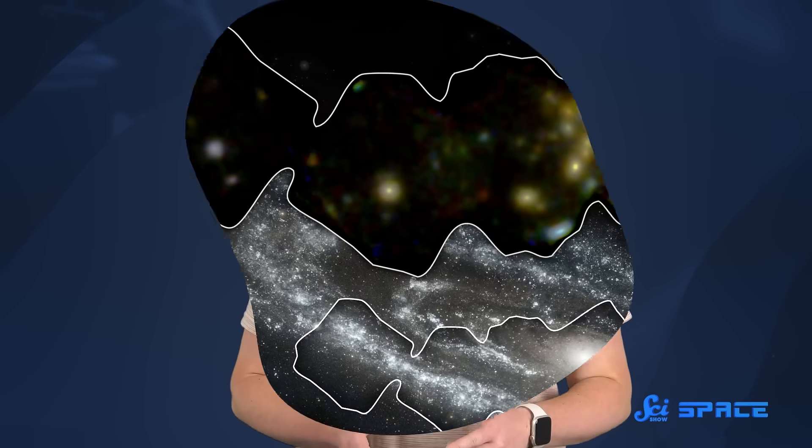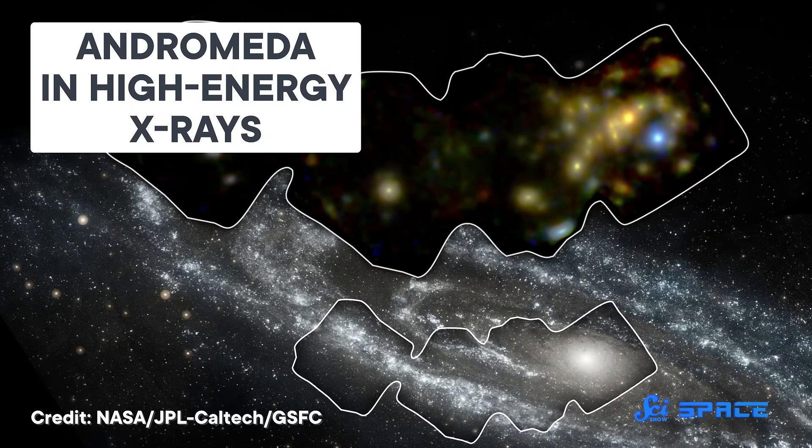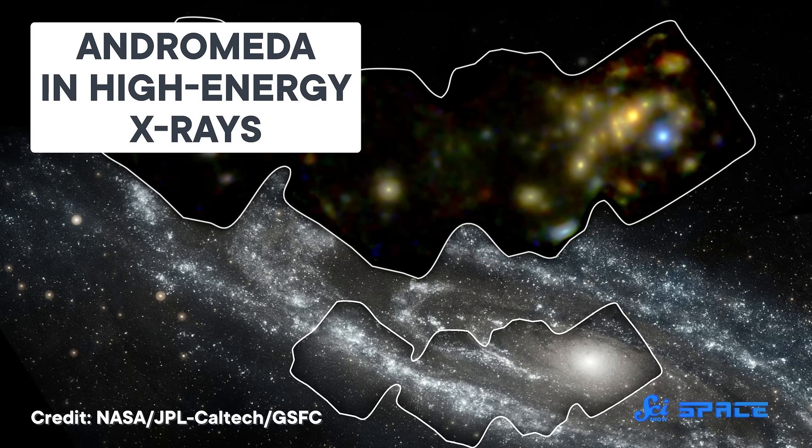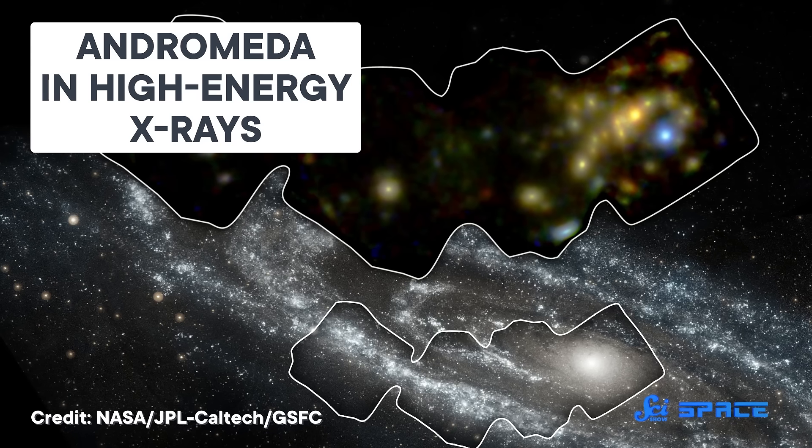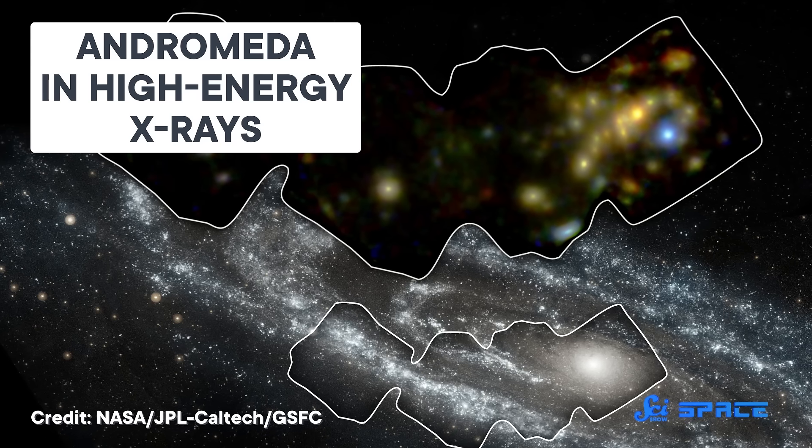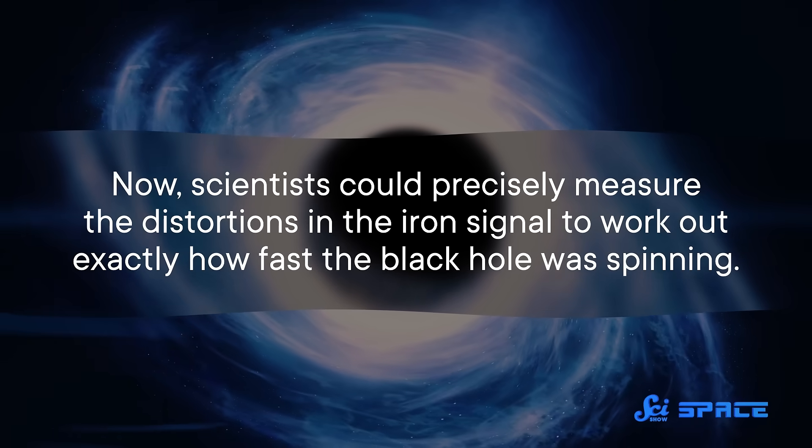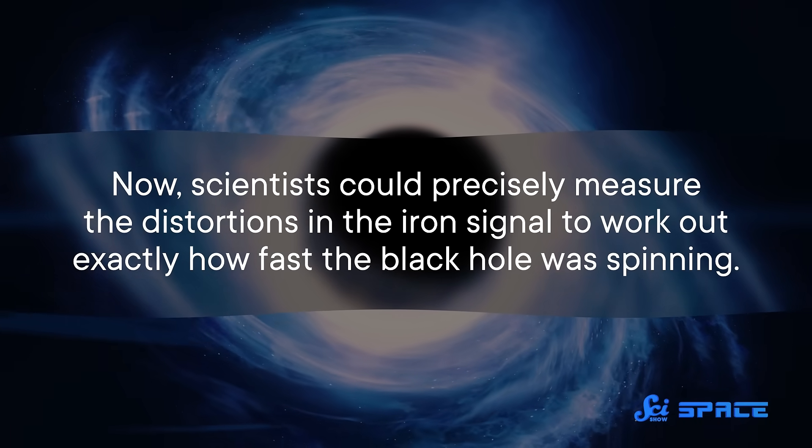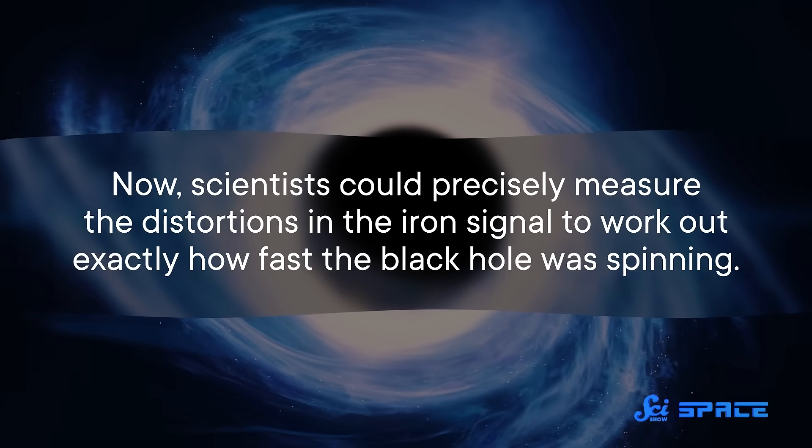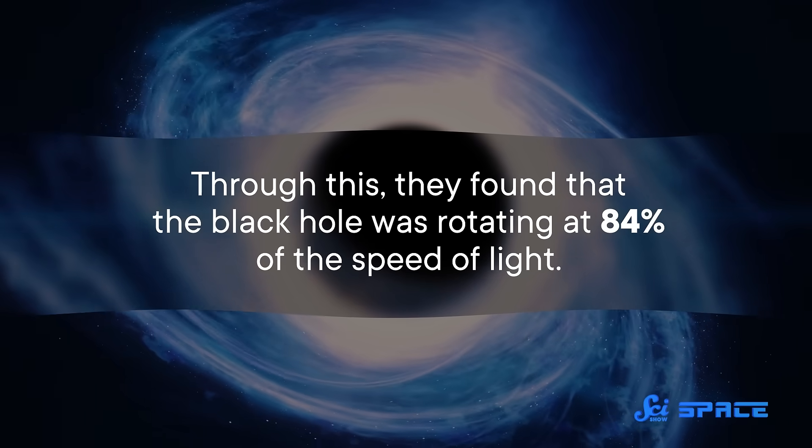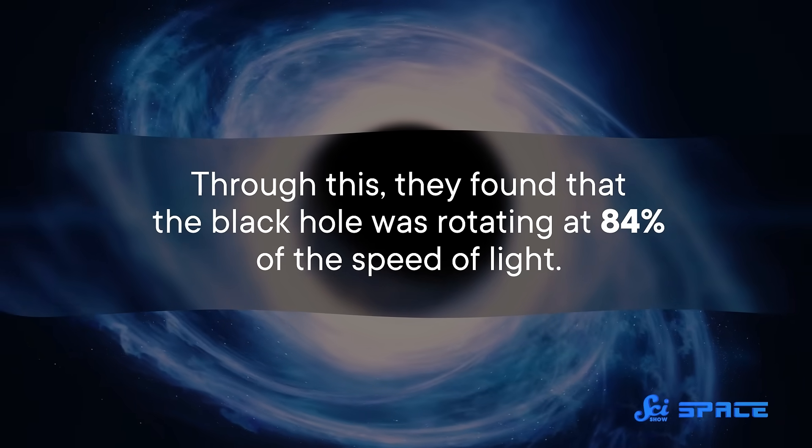That's where NUSTAR came in. NUSTAR detected this same iron signal, but in higher-energy wavelengths that would cut through any dust. And it found that the signal was still distorted, proving that it wasn't clouds causing the distortion, but the black hole's spin itself. Now, scientists could precisely measure the distortions in the iron signal to work out exactly how fast the black hole was spinning. Through this, they found that the black hole was rotating at 84% of the speed of light.